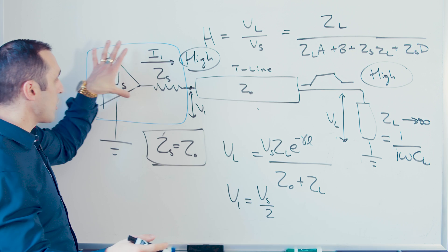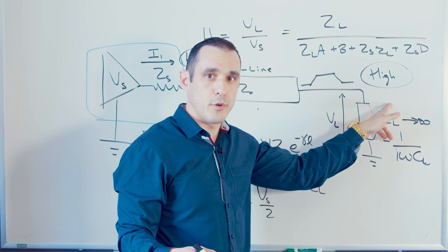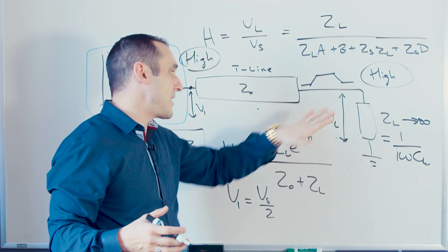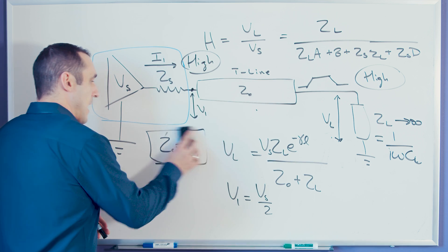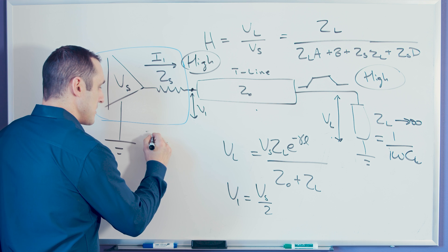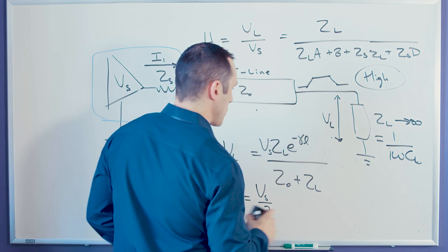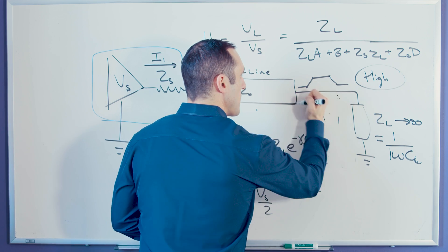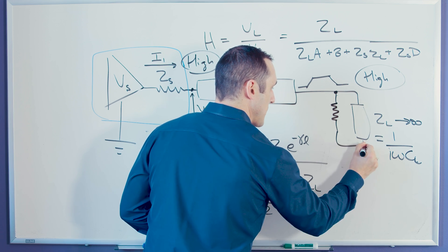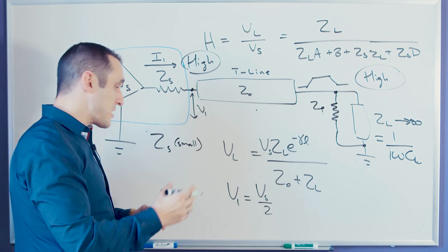So if we send out a 3.3-volt signal from V sub S, we expect to see 3.3 volts at the load to toggle the logic state. Now instead of having a series terminator, let's assume Z sub S is small, and instead of a series termination resistor, we have a parallel termination resistor — a resistor that connects to ground — which we'll call Z sub P, or Z parallel. What happens to the transfer function in this case?